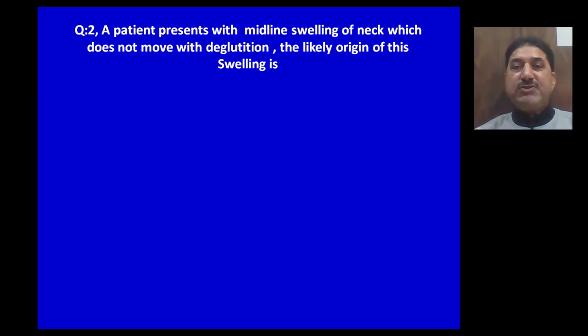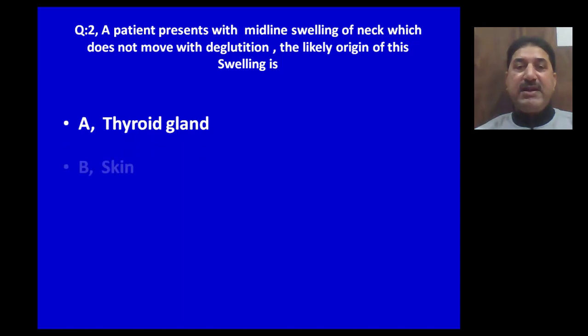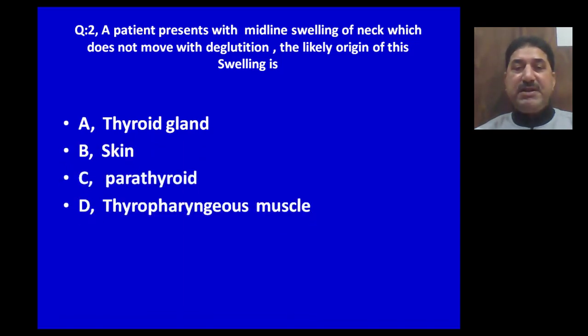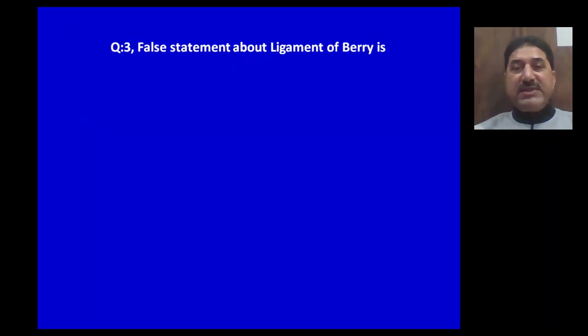A patient presents with a midline swelling of the neck which does not move with deglutition. The likely origin of this swelling is: A) thyroid gland, B) thyroglossal cyst, C) parathyroid, D) thyropharyngeus. Thyroglossal cyst is the correct option.